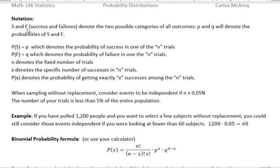The notation S and F are success and failures. Because there's two possible outcomes, we can talk about success and failure, and that denotes the two possible categories of all outcomes. We're going to use P and Q to denote the probabilities of S and F.